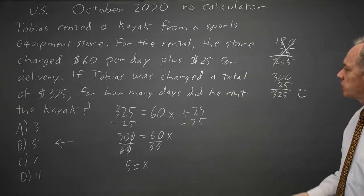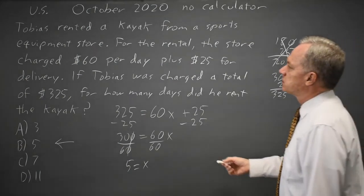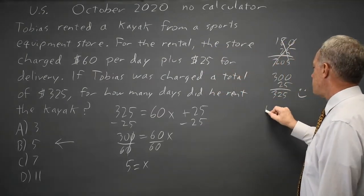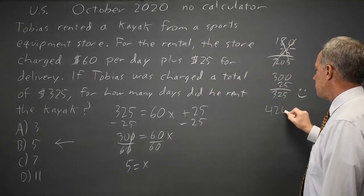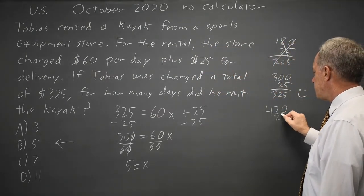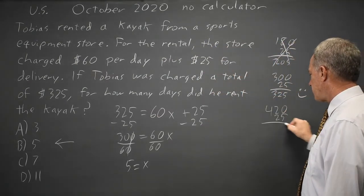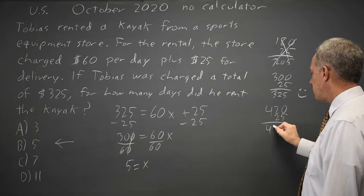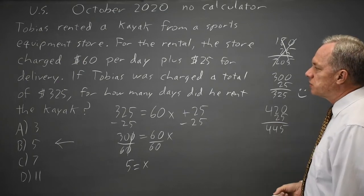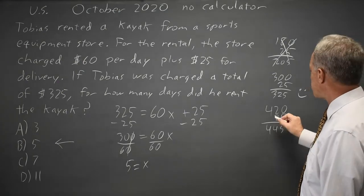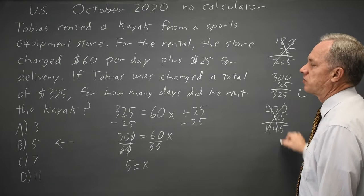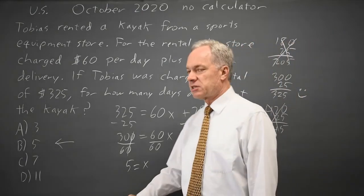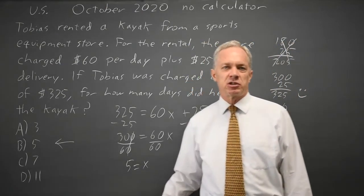If I try 7, then 7 times $60 per day is $420, which is already too much. Add in $25 for delivery and it's $445, which is more than Tobias paid. So that's wrong. And if 7 was too much, then 11 is certainly too much.